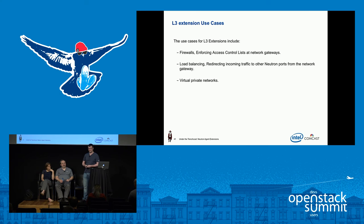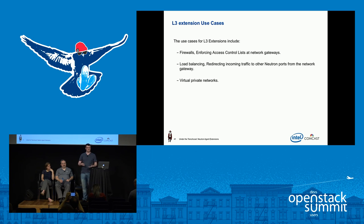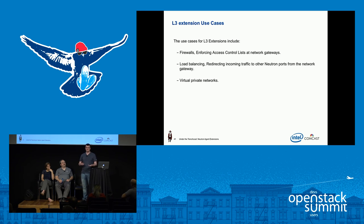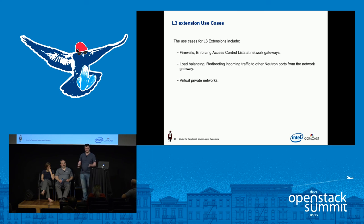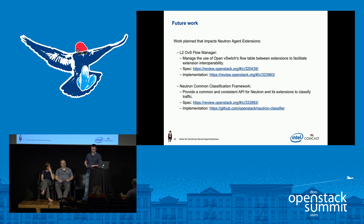The use cases for L3 extensions include firewall-as-a-service, load balancing, and VPNs. The L3 extension updates on router update, sending all gateway information for routers. That makes it very good for firewall-as-a-service — applying access control lists on traffic coming in and out of gateways — for example, restricting traffic coming into a particular subnet from another subnet. Load balancing distributes traffic across different VMs to stop them getting overloaded.